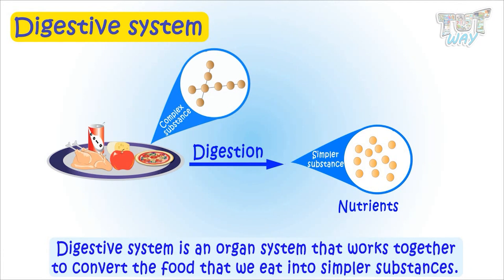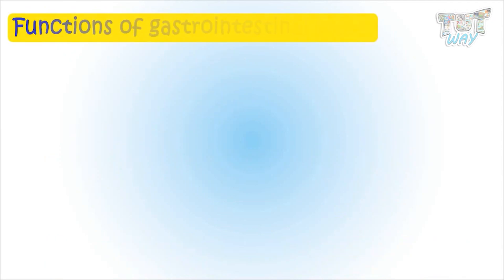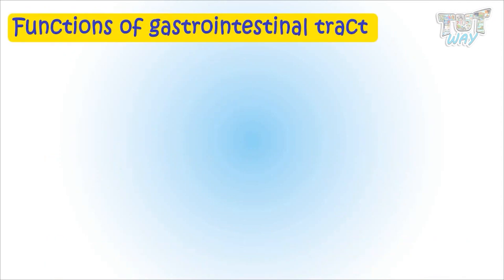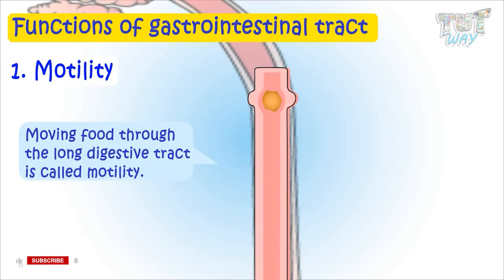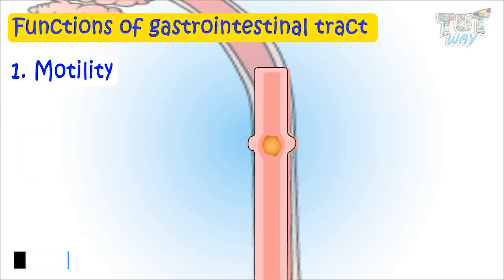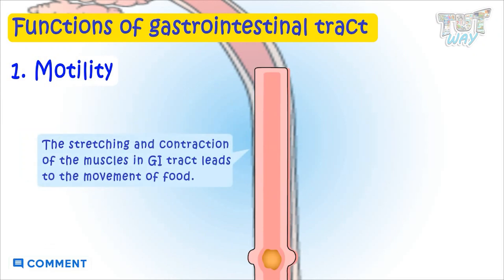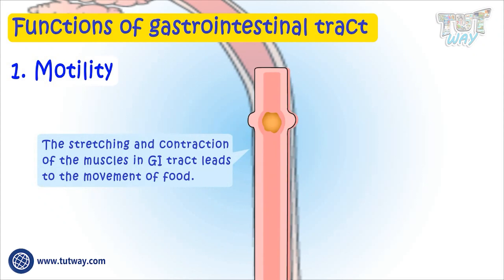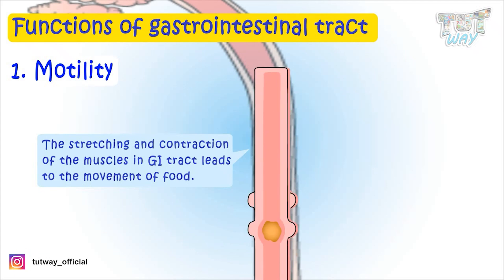Now let's learn the main functions of the alimentary canal, or our GI tract. The first is motility. Moving food through the long digestive tract is called motility, and this is a very important function of our GI tract. It happens through the stretching and contraction of muscles in the GI tract, which leads to the movement of food through it.